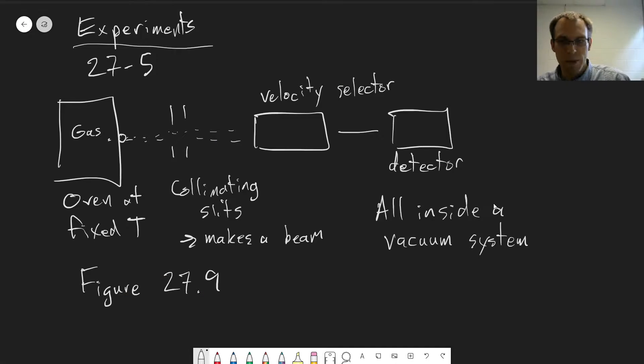So with this, we can actually get experimental data that verifies the distribution, the Maxwell distribution that we showed previously. So you can do the experiment by changing the speed of that drum. So you can start slow, and that'll be your low-velocity particles, your slow particles.